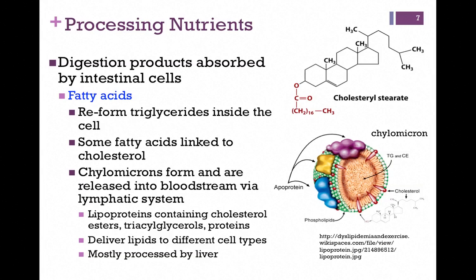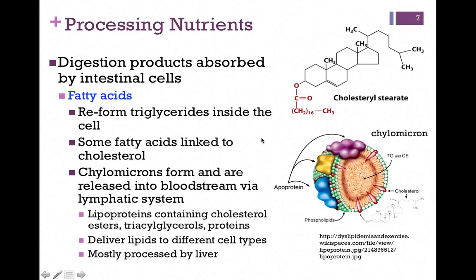These digestion products are absorbed by intestinal cells. Fatty acids oftentimes are reformed into triglycerides once they're inside the cell. Some may be linked to cholesterol. At the top of the screen here, we have cholesterol stearate — you can see we've added a fatty acid chain to the OH on cholesterol. Much of our cholesterol is in the form of a cholesterol ester.